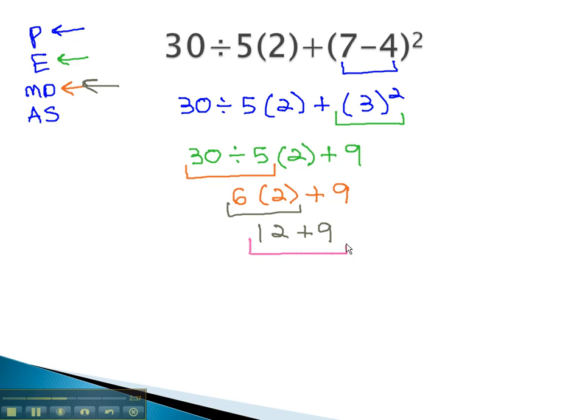Finally, to finish this problem, we'll do the addition last. 12 plus 9 is 21, and we have our final solution.